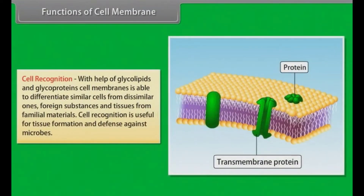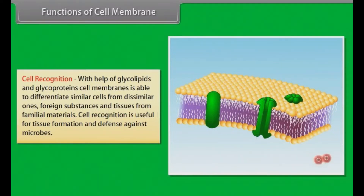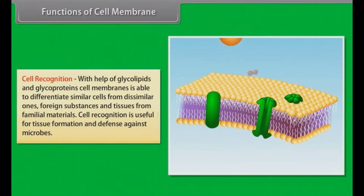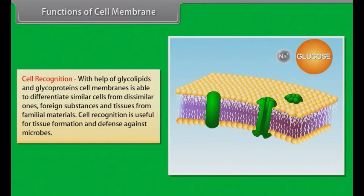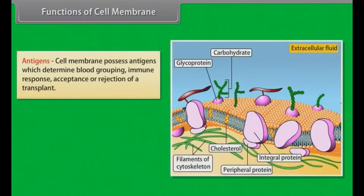Cell recognition: with the help of glycolipids and glycoproteins, the cell membrane is able to differentiate similar cells from dissimilar ones, and foreign substances and tissues from familiar materials. Cell recognition is useful for tissue formation and defense against microbes. Antigens: the cell membrane possesses antigens which determine blood grouping, immune response, and acceptance or rejection of a transplant.